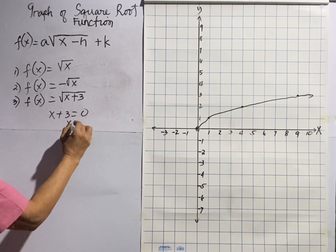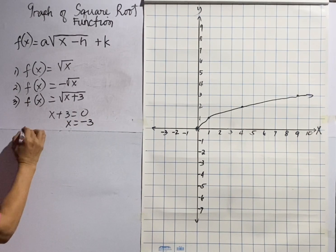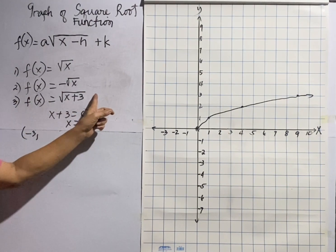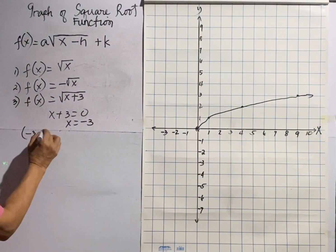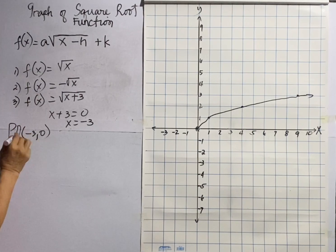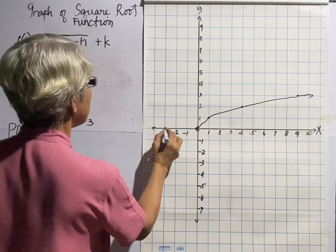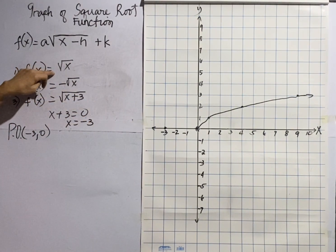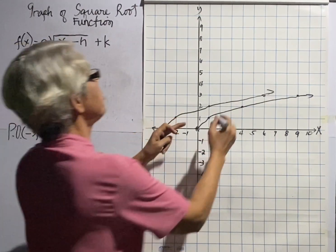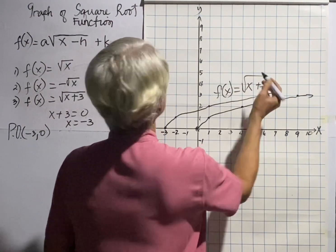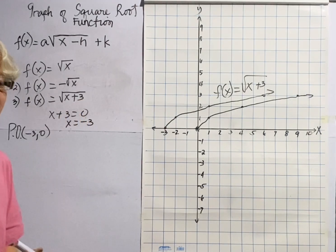Therefore our x is negative three. Since there is no constant number outside the radical, the second coordinate is zero. Plot this point of origin — it is here at (-3, 0). The same as in our first example, we count one, three, five. This is now the graph of f(x) equals the square root of (x plus three).